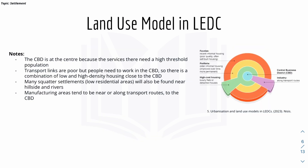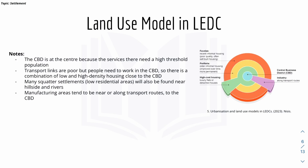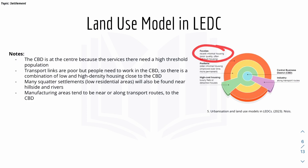Instead of MEDCs, we'll now look at the land-use model for LEDCs. At the center there is also a CBD, but around it is high-cost housing. Moving away, you find lower-cost housing, then favelas — which are basically shanty towns — and then manufacturing industry going toward the CBD. The reason high-cost housing is near the CBD in LEDCs is because LEDCs may lack good transportation links, so wealthy people who work in the CBD locate close to it. Low-income residential areas are also found near hillsides and rivers, and manufacturing areas tend to be along transport routes to the CBD.